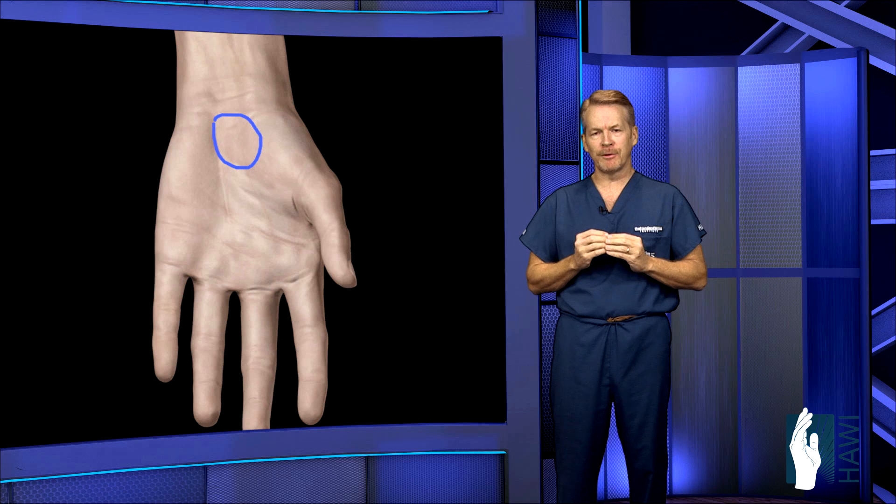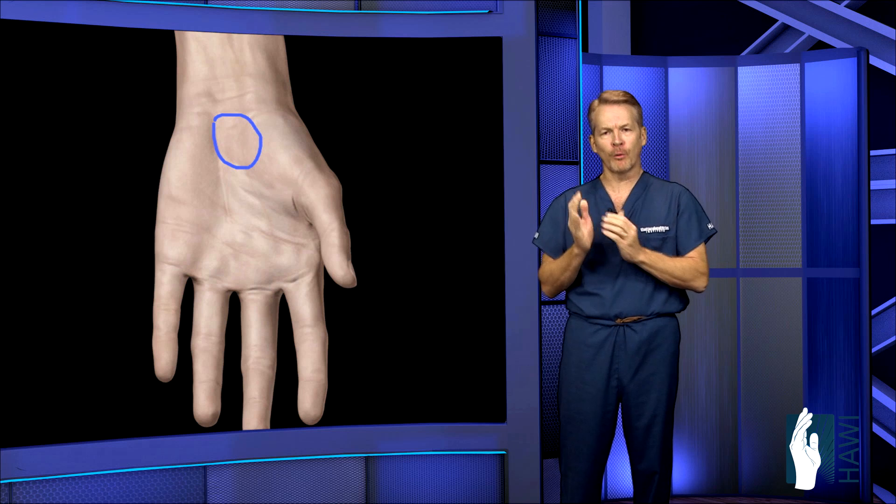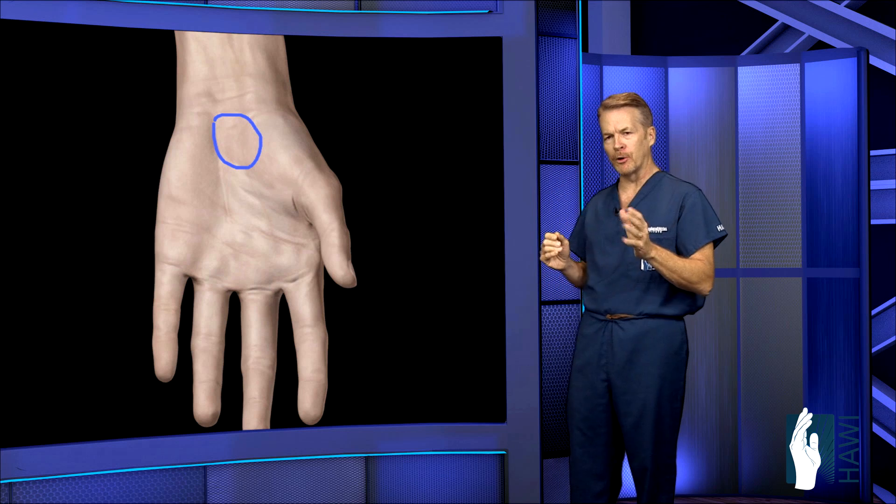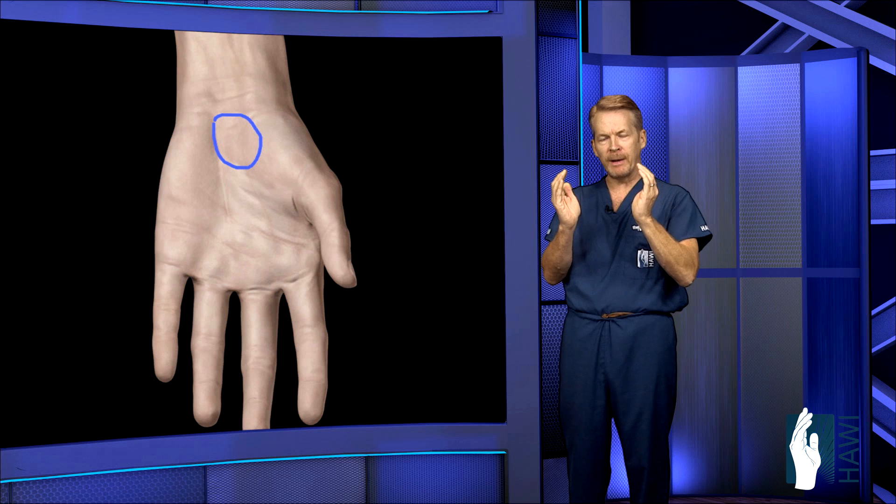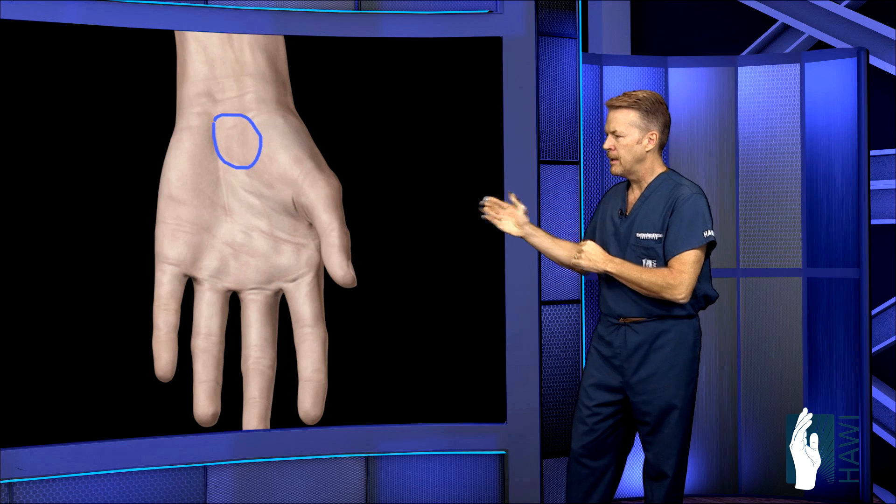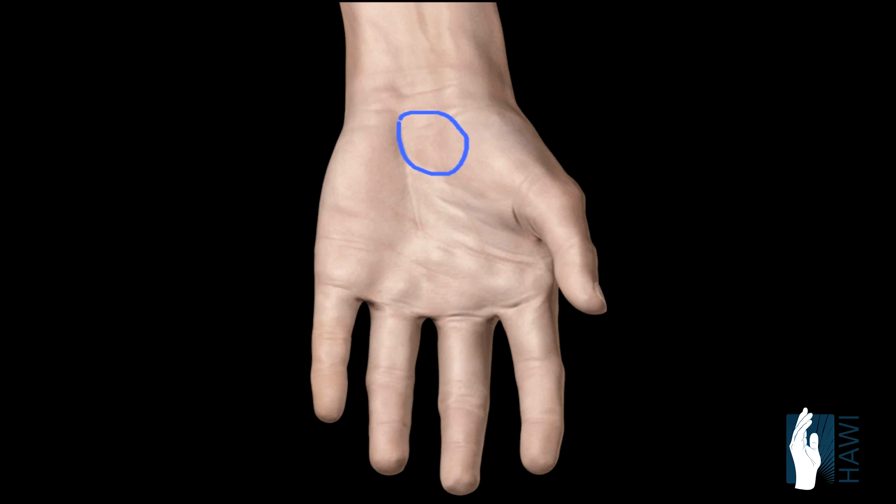About three months after surgery, you can expect to have soreness in the palm. This is called pillar pain where the ligament folds back after we cut it and you get soreness as you can see here from this circle area graphic that shows the area of the soreness you should have. But eventually, it'll dissipate.